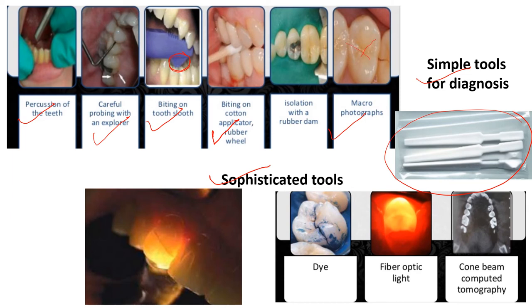Sophisticated tools for diagnosing crack tooth syndrome include staining the fracture with methylene blue dye, which is a valuable aid to detect the fracture line clearly. Another method is using fiber optic light to transilluminate the fracture line — most cracks run mesiodistally and are rarely detected radiographically when incomplete.